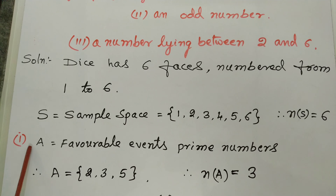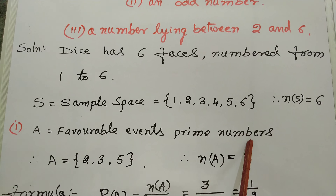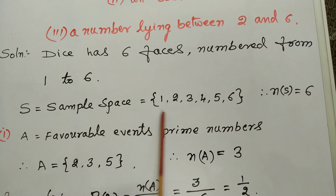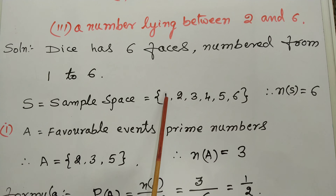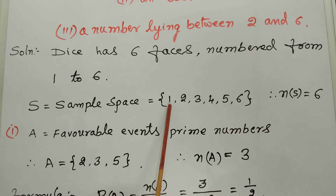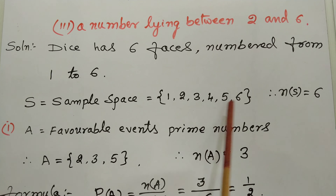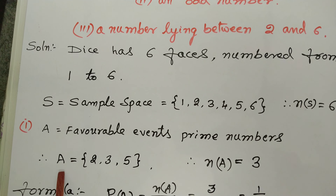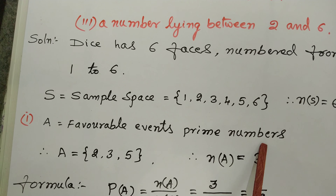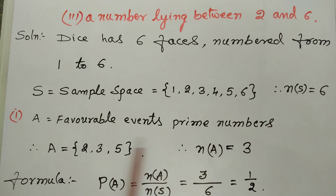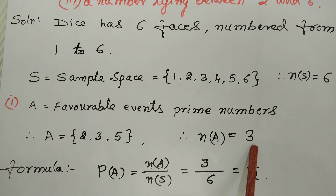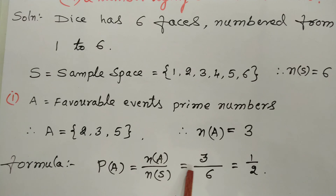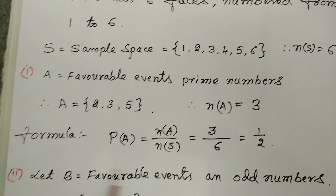Number 1: Let A indicate prime numbers. In the possible events, 1 is neither prime nor composite; 4 and 6 are composite. Therefore, we take only 2, 3, 5. So A = {2, 3, 5}, and n(A) = 3. Formula: P(A) = n(A) / n(S) = 3 by 6 = 1 by 2.